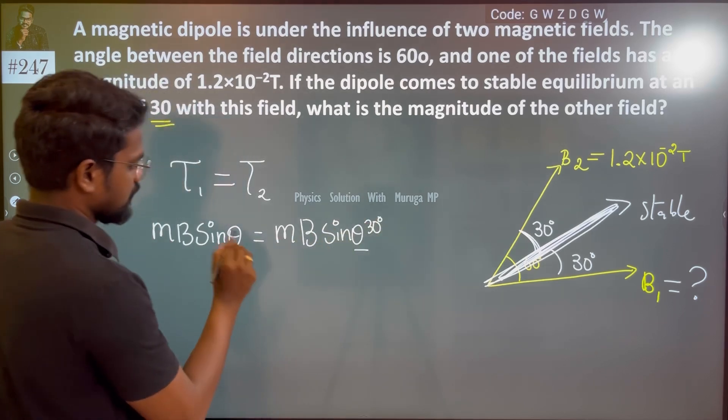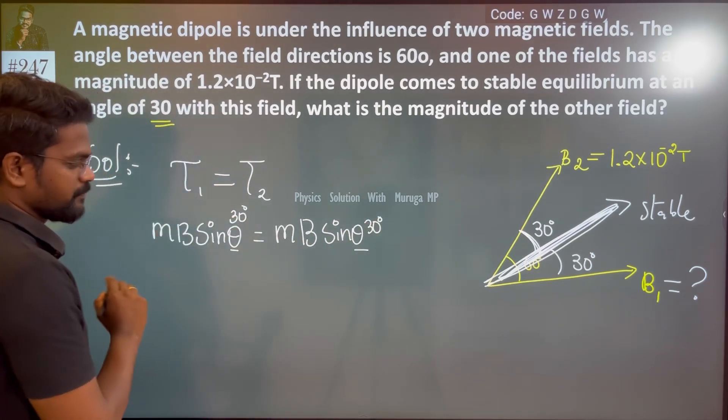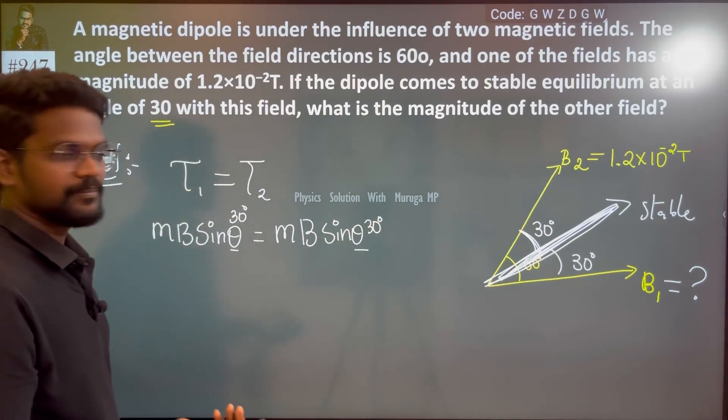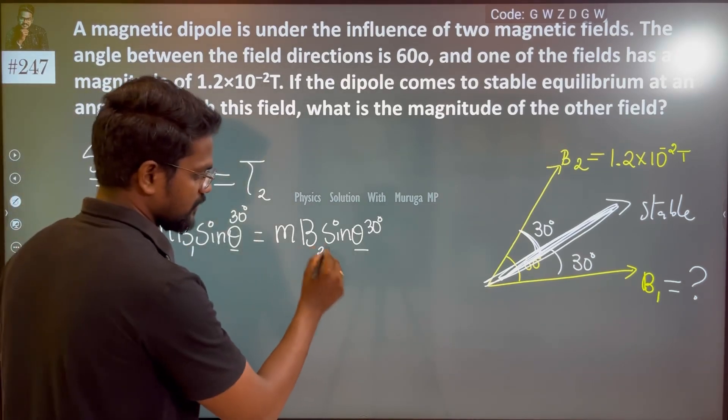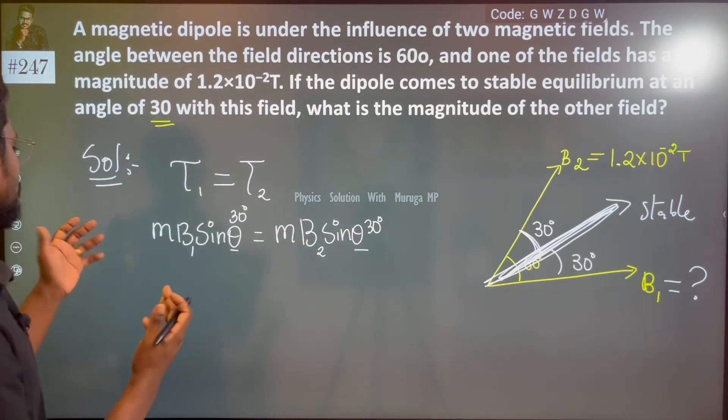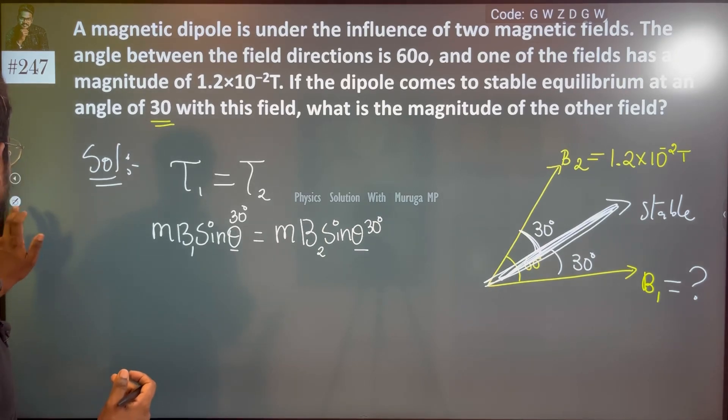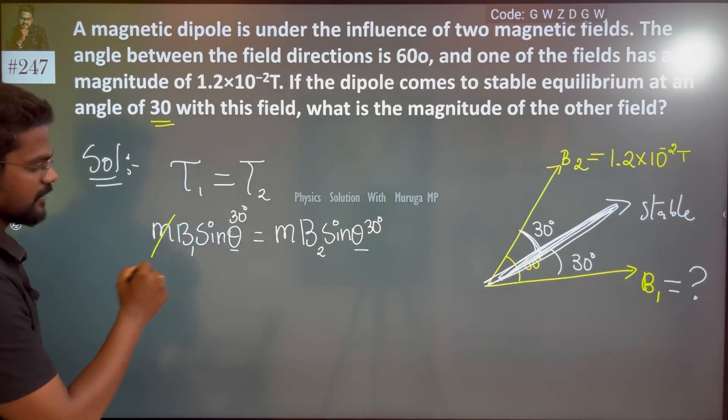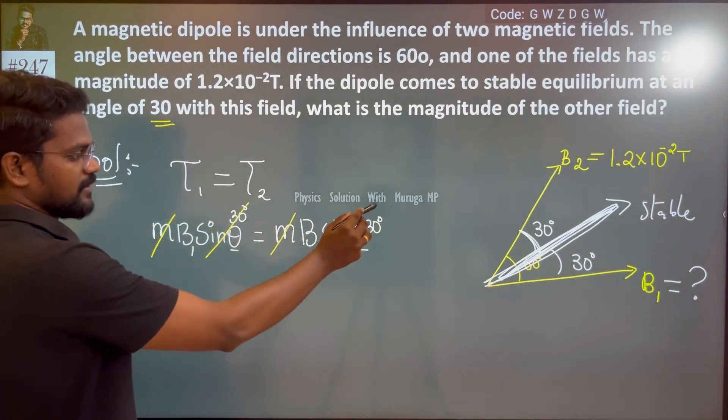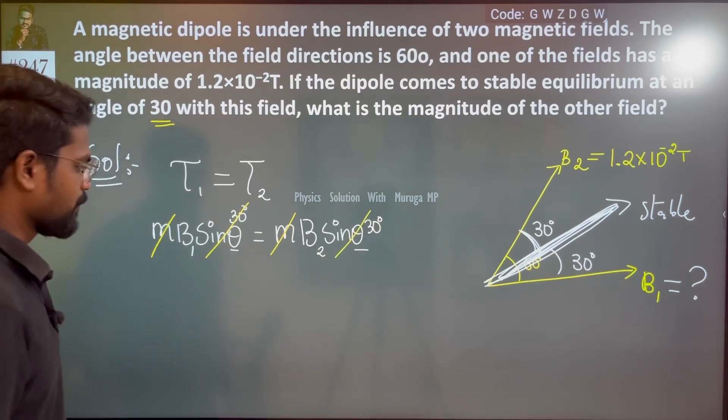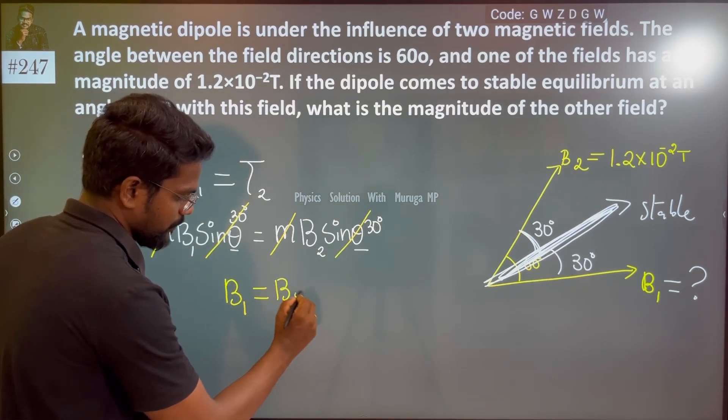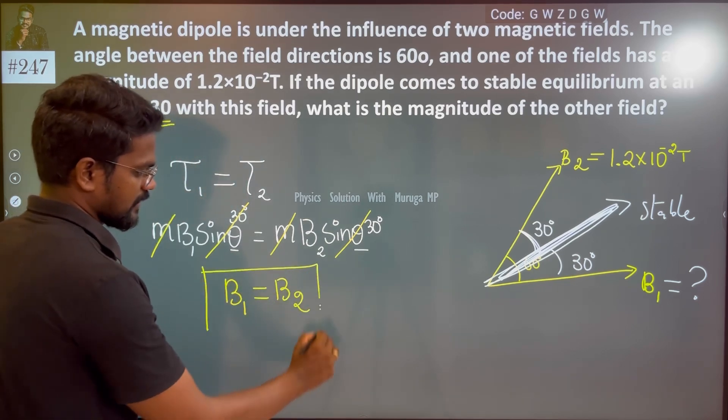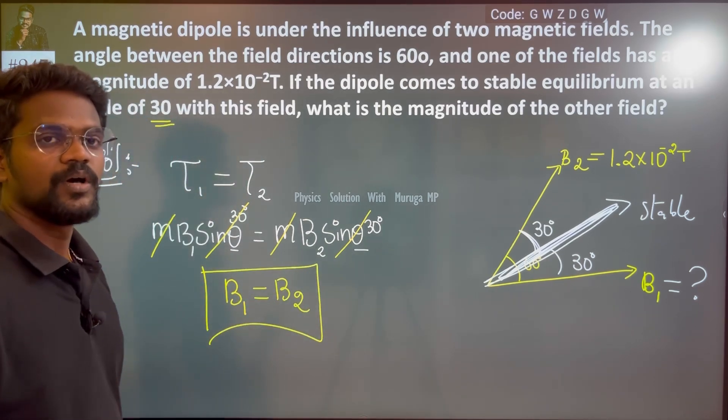The magnetic moment is obviously the same, and regarding the magnetic field strength, we are trying to conclude here that B1 will be equal to B2.